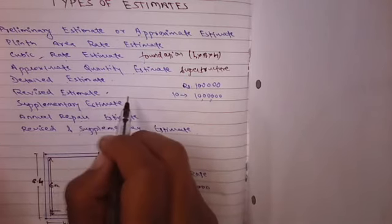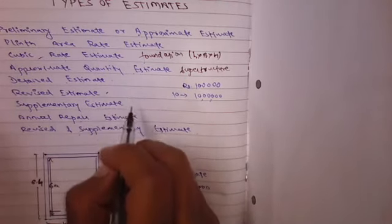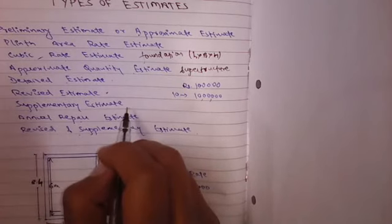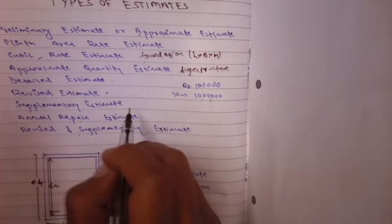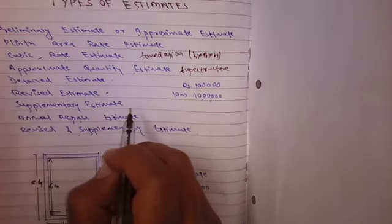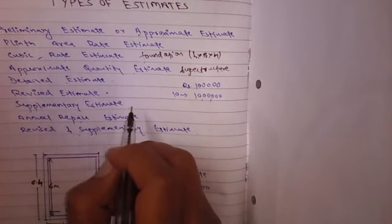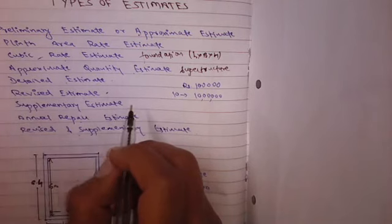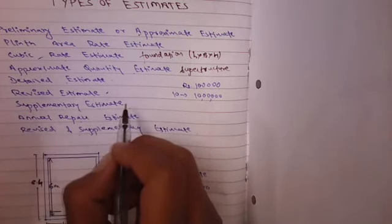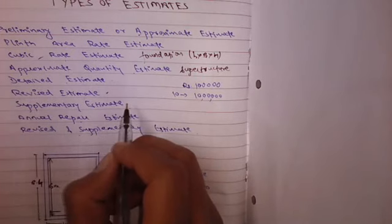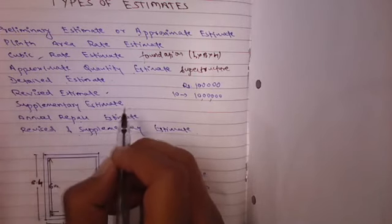Now for supplementary estimate: like we made a school building. In this we put all the doors made of wood. Now they want that the doors must be of steel, so we put the doors of steel in place of wooden doors. So that is the extra cost or addition or subtraction of the cost. So this is supplementary estimate.